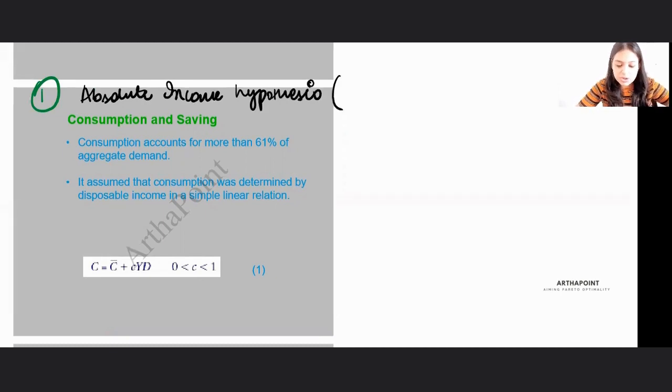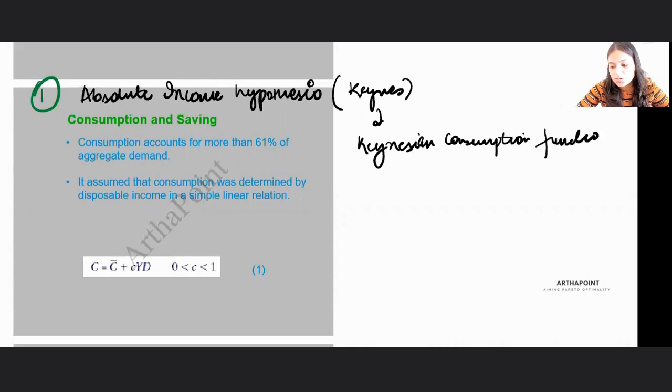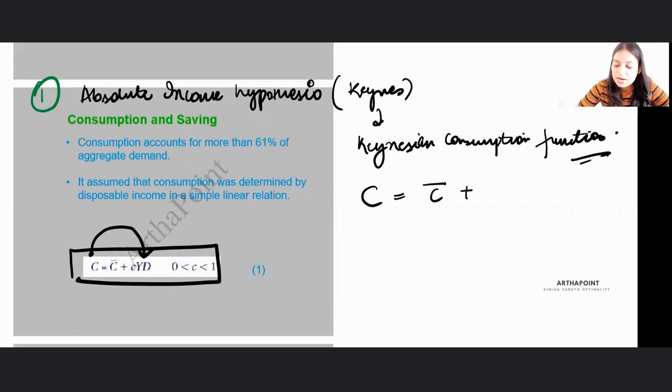This consumption theory was given by Keynes, also known as the Keynesian consumption function. Now, what is this Absolute Income Hypothesis? This says that consumption only depends on the level of my disposable income. So it says C is equal to C bar plus small c times YD. Consumption is a function of disposable income.